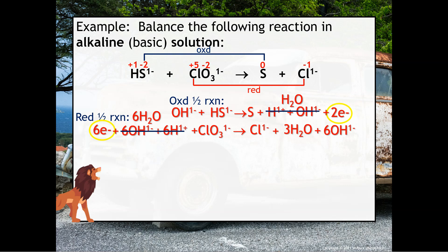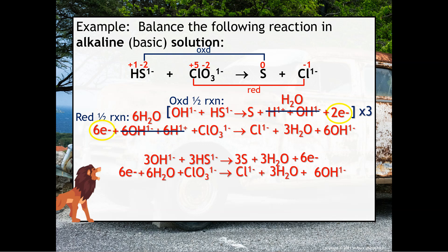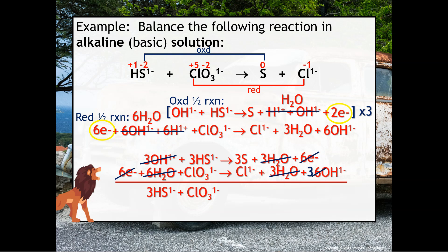Notice that electrons lost does not equal electrons gained, so we multiply the oxidation half reaction by 3 and rewrite everything carefully. The reduction half reaction stays the same, so we write it as is. We cancel identical species on either side of the arrow — electrons cancel, and notice there are six waters on the left and six on the right, so those cancel too. The hydroxide also divides out: three on the left cancel from the six on the right, leaving three OH- on the right.